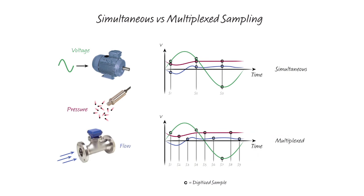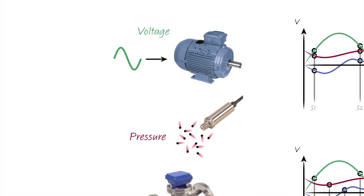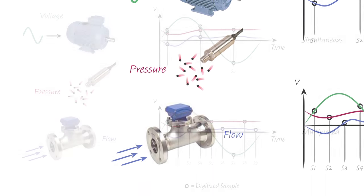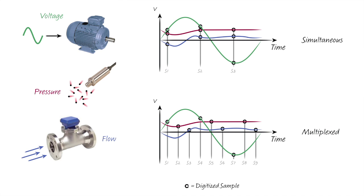The goal of both simultaneous and multiplex sampling data converters is to produce digital representations of two or more real-world analog variables. Let's compare digitizing three typical process variables: a motor excitation voltage, a pressure sensor signal, and a fluid flow sensor signal using a simultaneous sampling converter shown in the top plot and a multiplex converter shown in the bottom plot.